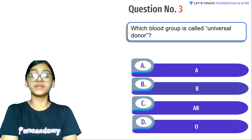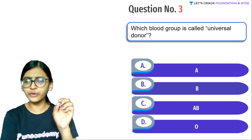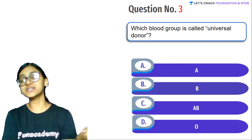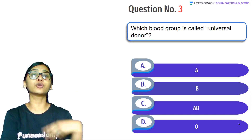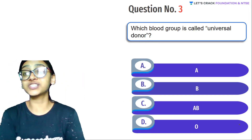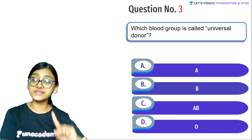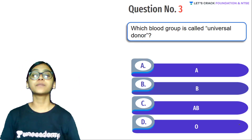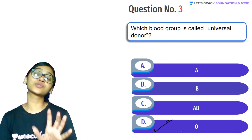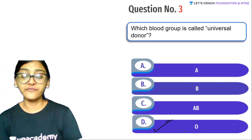Next question: Which blood group is called the universal donor? Options are A, B, AB, O. Even if you have no idea regarding blood grouping, you should know this. Answer quickly in the comment section. Yes, you are all right — blood group O is the universal donor. More specifically, O negative is the universal donor, whereas AB positive is the universal acceptor.